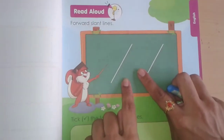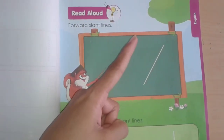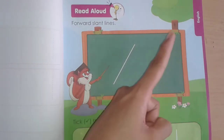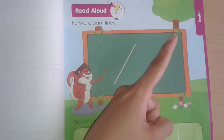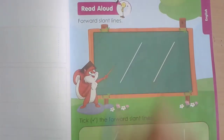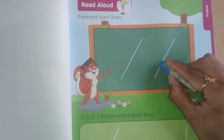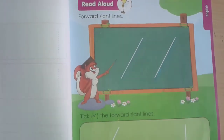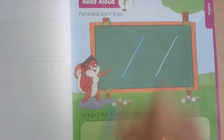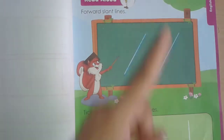This is a forward slant line. Repeat after me: forward slant line. You have to say it with me. Forward slant line. One more time — forward slant line. Forward slant line.